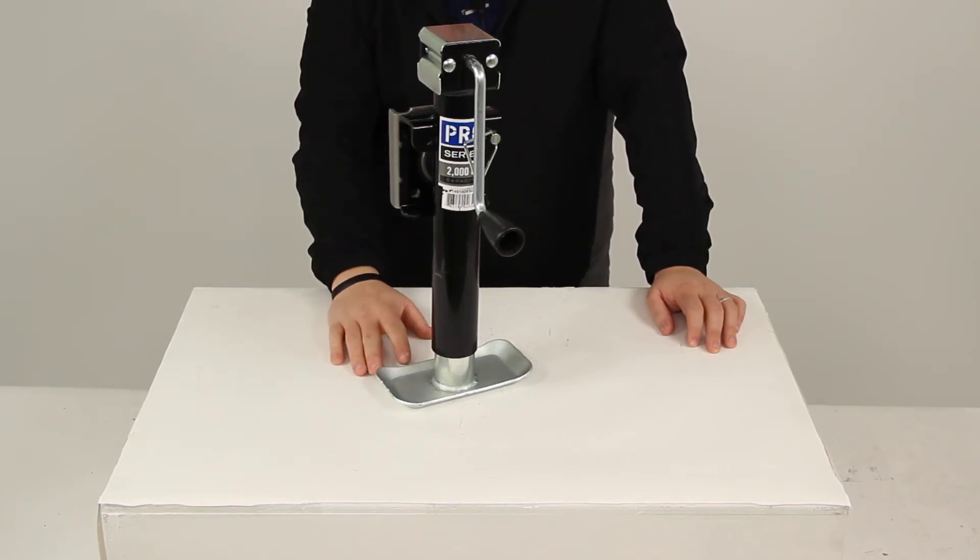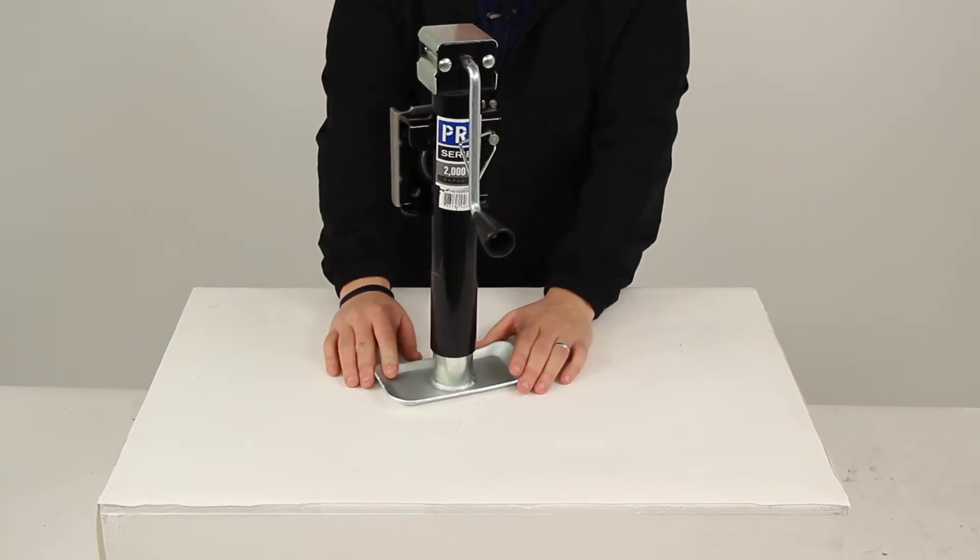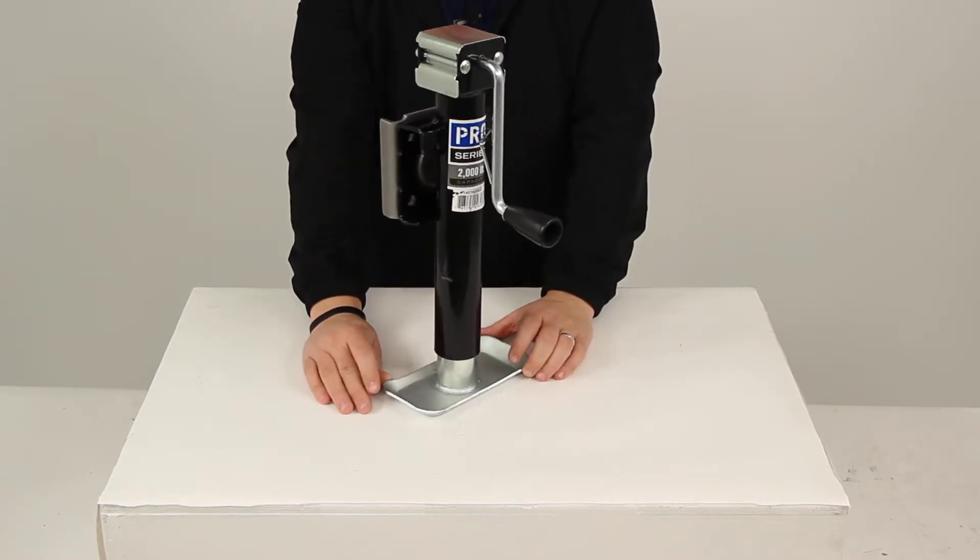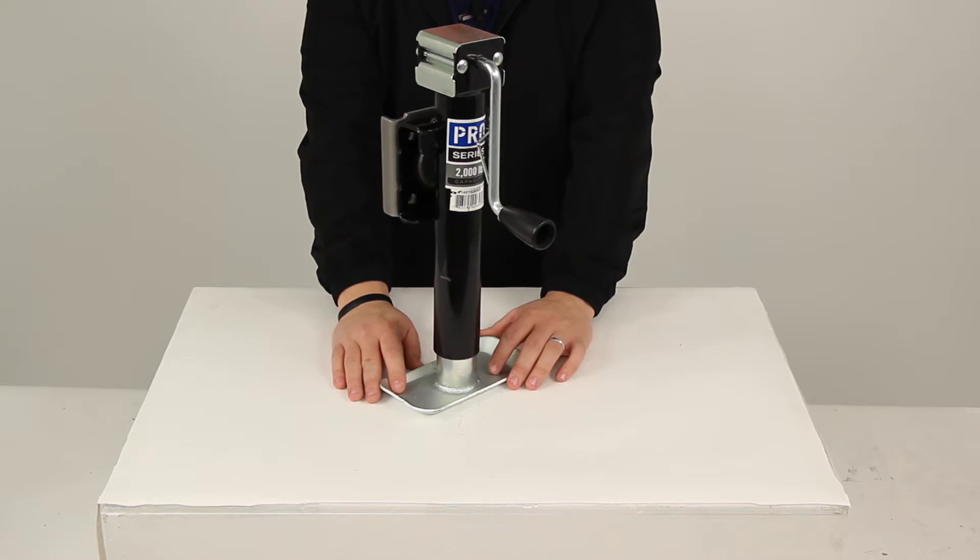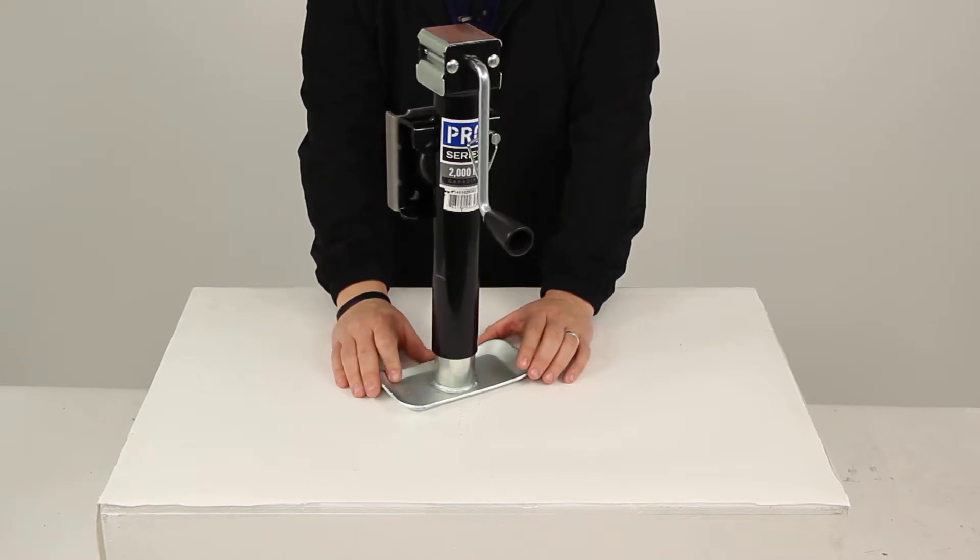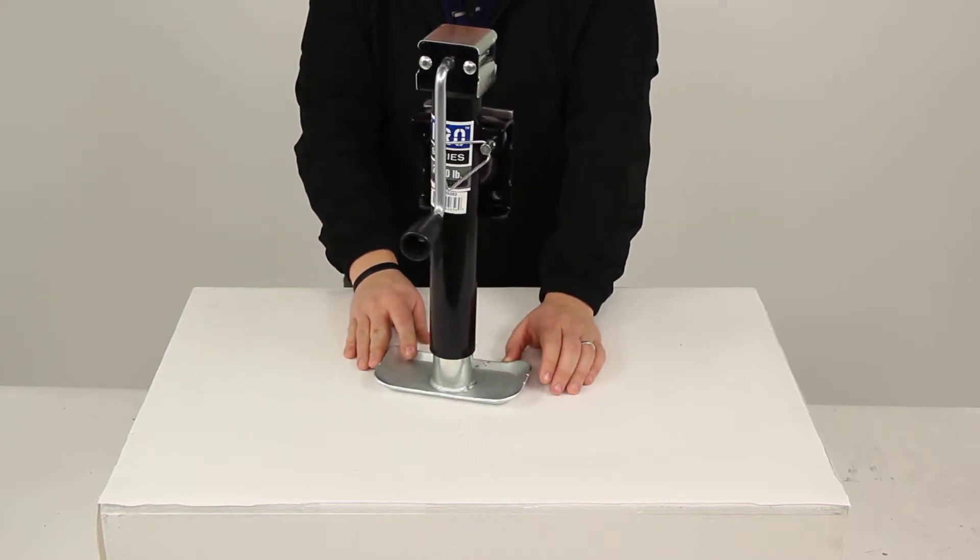Today we'll be reviewing part number PS1401020303. This is the Pro Series Round Snap Ring Swivel Jack rated at 2,000 pounds. This utility jack is perfect for agricultural and commercial applications.